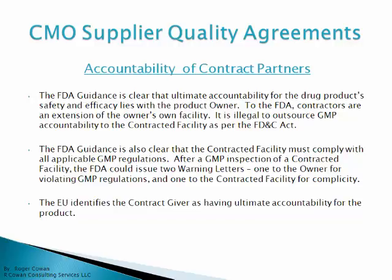The FDA guidance is also clear that the contracted facility must comply with all applicable GMP regulations. After a GMP inspection of a contracted facility, it's conceivable that the FDA could issue two warning letters — one to the owner for violating GMP regulations and one to the contracted facility for complicity.